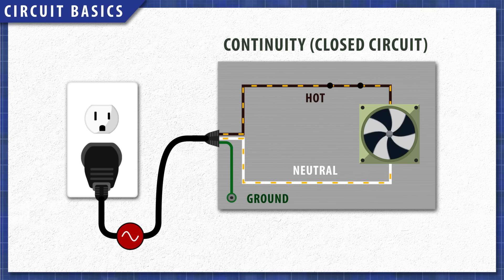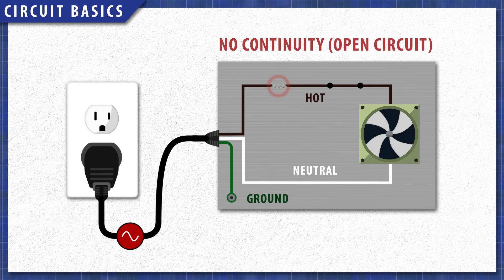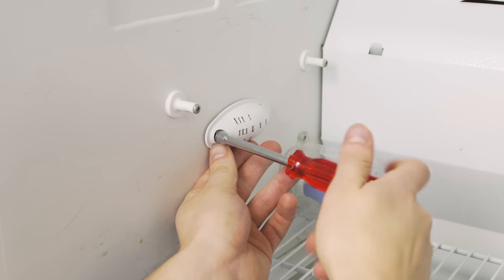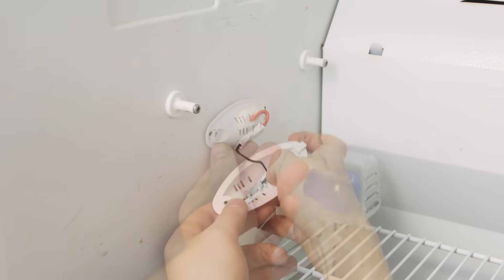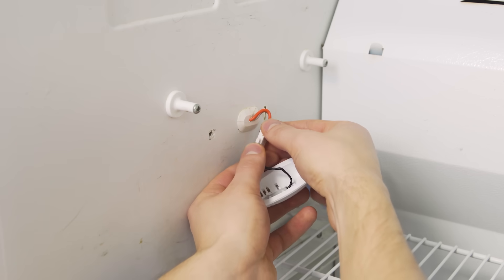If we disrupt this path with rubber, plastic or by air in the case of a broken wire, the electrons will not flow as there is no continuity. This is an open circuit. In many cases the lack of continuity in a single component will prevent an appliance from working properly.